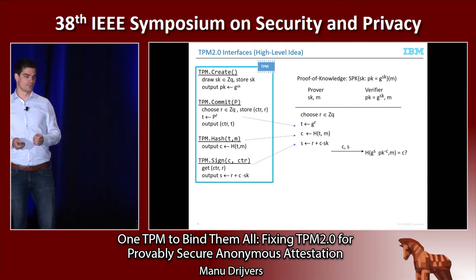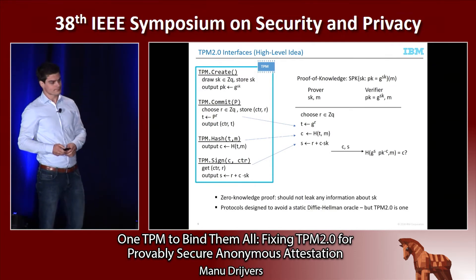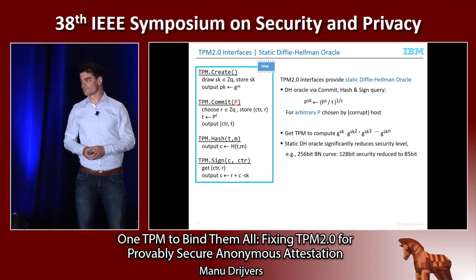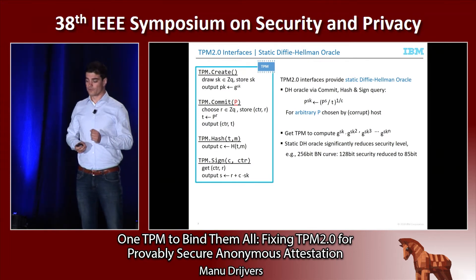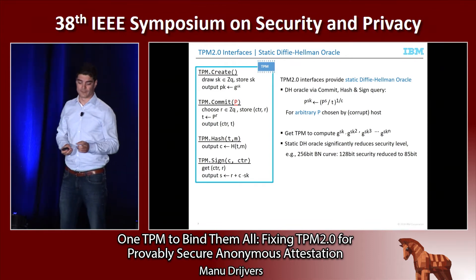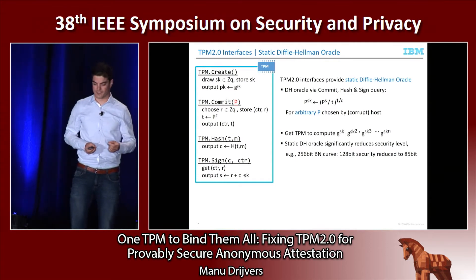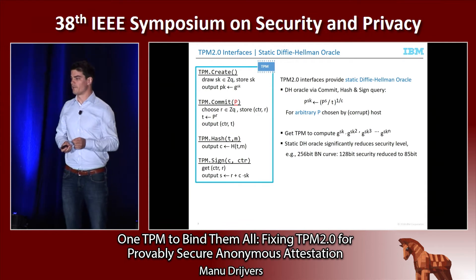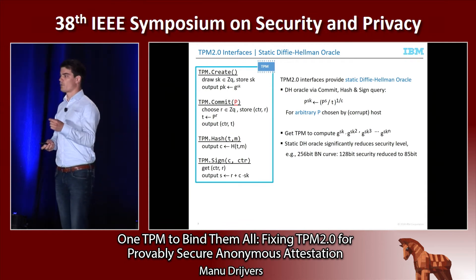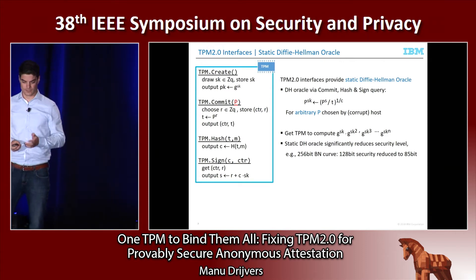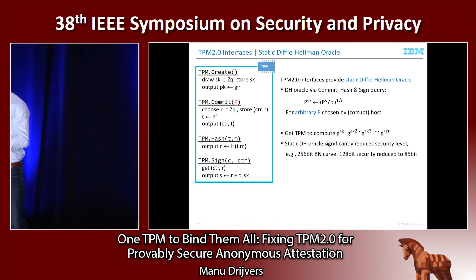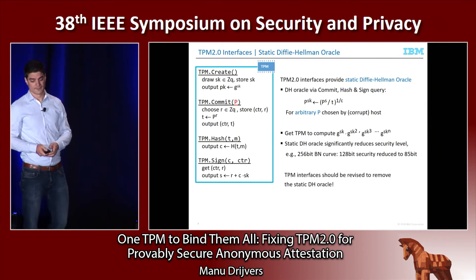This looks very good — we know the zero-knowledge proof does not leak information about the key being used. But there is actually a problem: a so-called static Diffie-Hellman oracle. The host — and remember, we don't trust the host — can learn a lot of information about the secret key with these four commands. It can give any point on the curve, say P, and get back P raised to the secret key of the TPM, then repeat to get P raised to the secret key squared, cubed, and so forth. With such a sequence of numbers, it becomes much easier to break the discrete log problem. In fact, on the Barreto-Naehrig curves used in this setting, the security could drop to a very uncomfortable 85 bits. So we should remove this static Diffie-Hellman oracle.